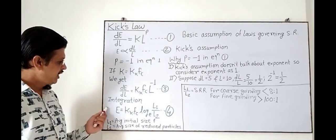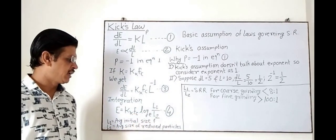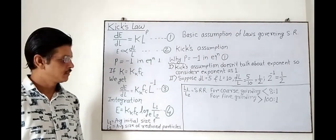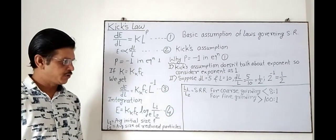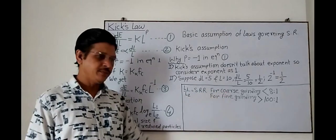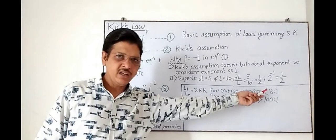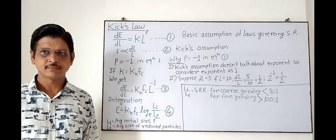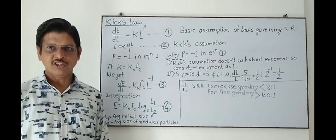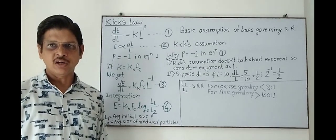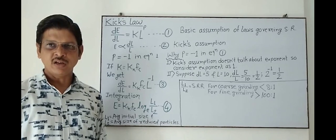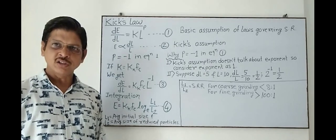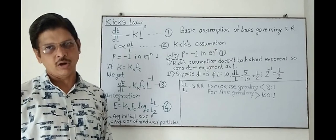Here L1 is the average initial size of particles and L2 is the average size of reduced particles. L1/L2 is the size reduction ratio. For coarse grinding, this size reduction ratio is less than 8:1, and for fine grinding it should be more than 100:1. As per equation 4, the statement of Kick's law, the energy required to crush a material from 100 microns to 50 microns is the same as the energy required to crush the same material from 50 microns to 25 microns.